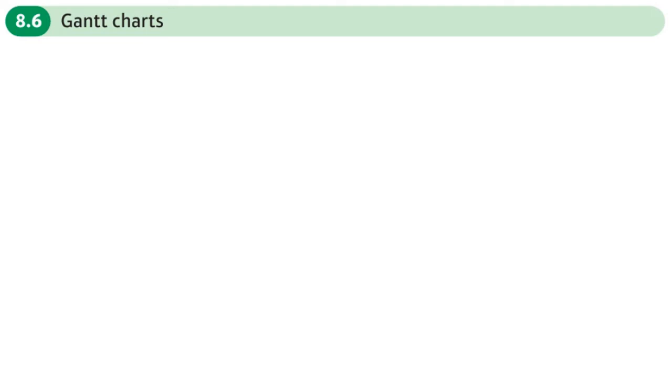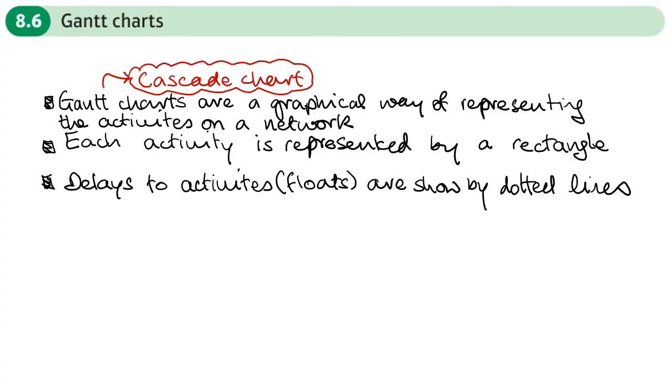This is the sixth section of Chapter 8, Critical Path Analysis on Gantt Charts. So what is a Gantt chart? A Gantt chart is a graphical way, also called cascade charts, of representing activities on a network. Each activity is represented by a rectangle. We have the time scale along the top, and delays to activities or floats are shown by dotted lines.